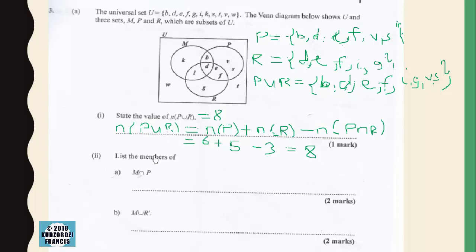Now we are supposed to list the members of M intersection P. So M intersection P is {b, d}.